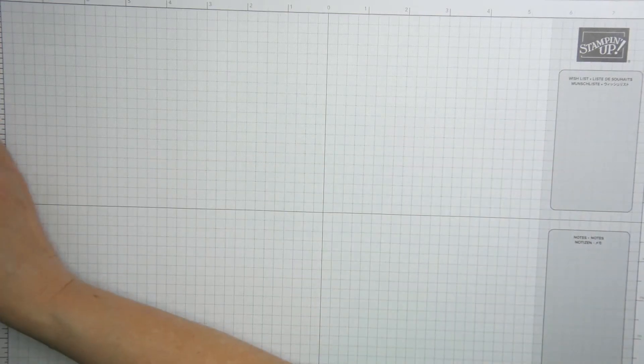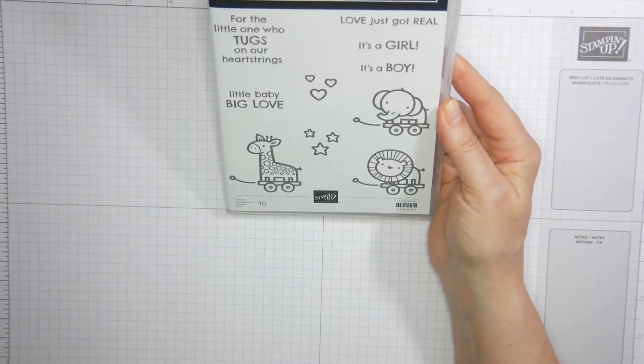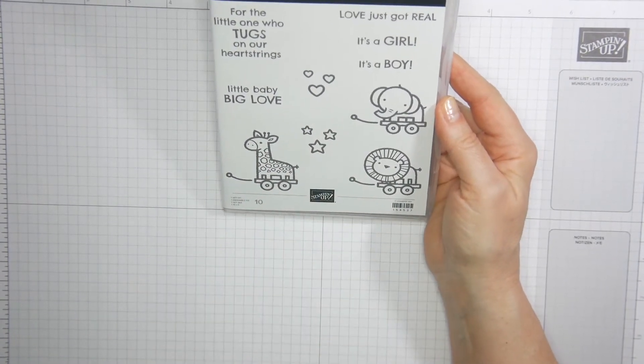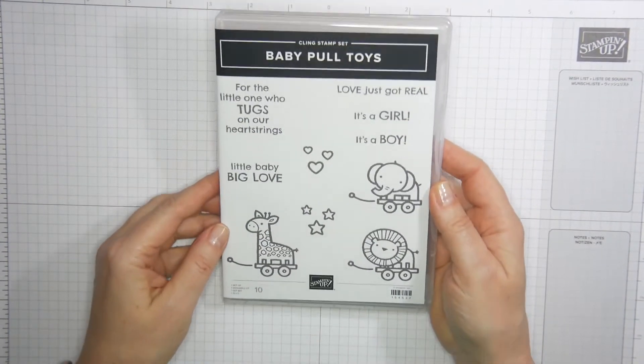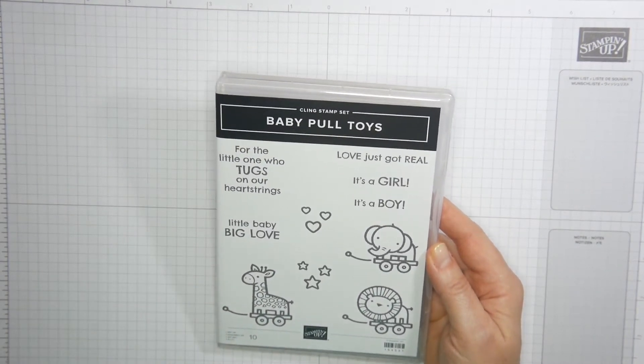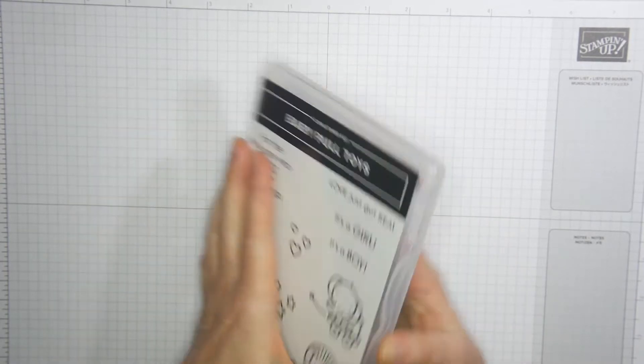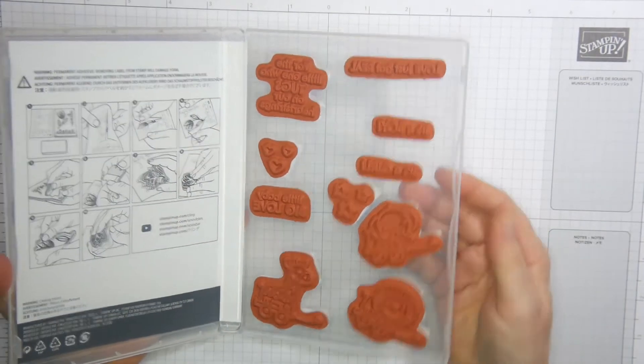Now, what do you need? Of course, first of all, the stamp set. This is brand new. It's going to be available from January. It's a really cute stamp set called Baby Pull Toys, and it's a cling stamp set.